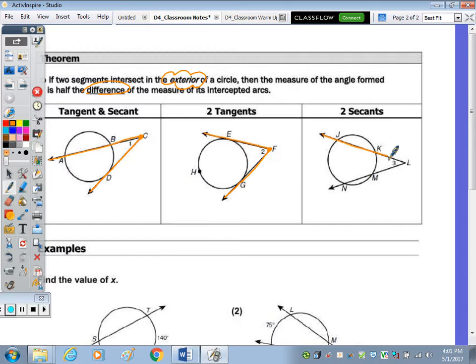And then here we have two secants, and they intersect at L, which is outside the circle. So the theorem, it said it's half the difference of the measure of its intercepted arcs.